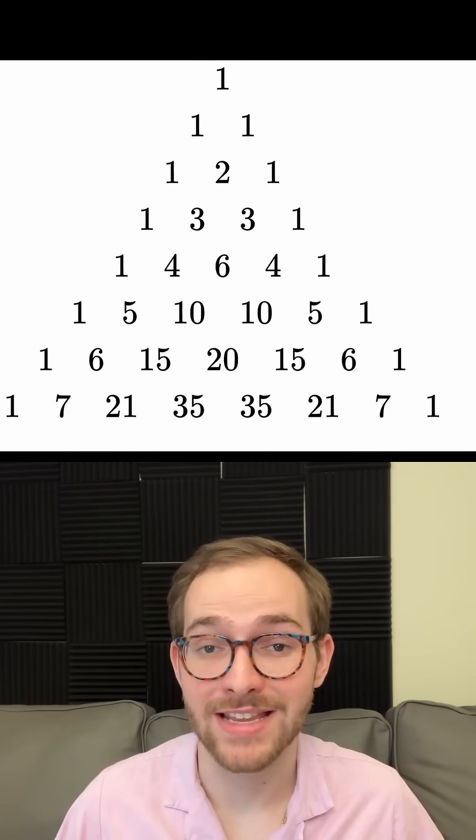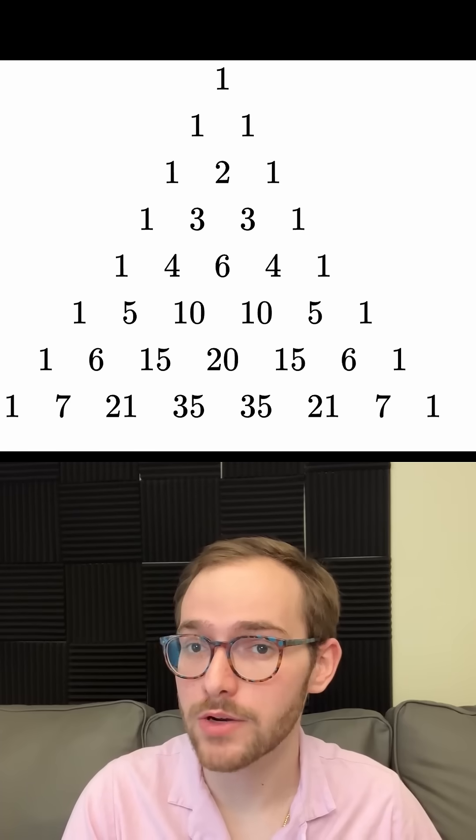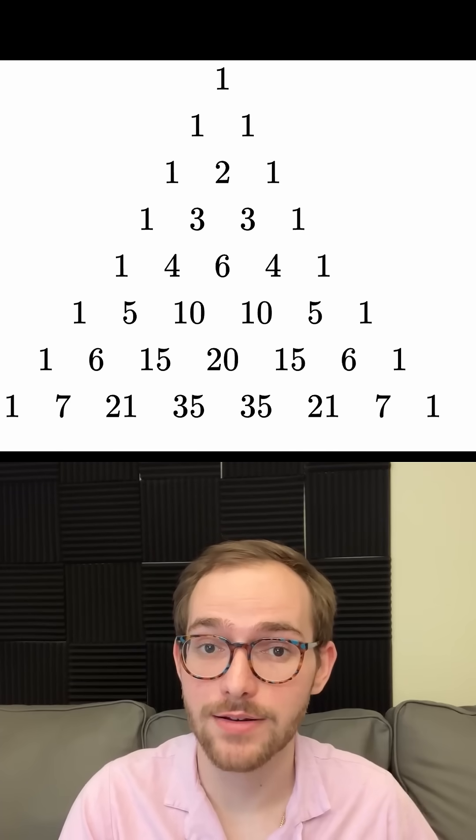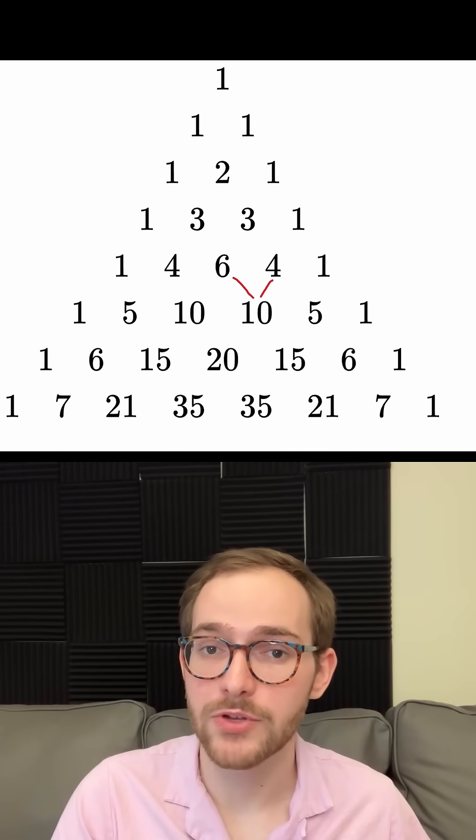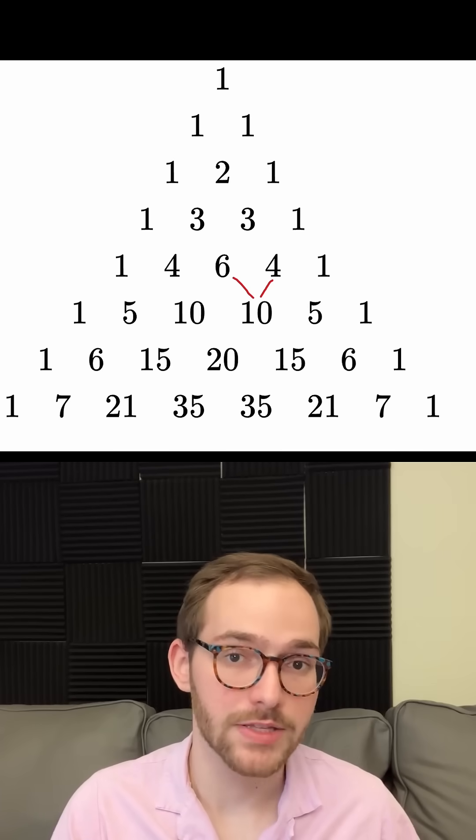Pascal's Triangle is an infinite triangle of numbers starting with the rows 1, 1, 1, and 1, 2, 1. Each number in a row is the sum of the two numbers above it, except for the ones which are both 1.